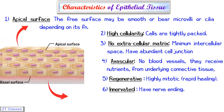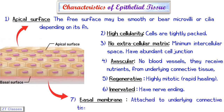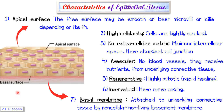The last characteristic of epithelial tissues is that they have a basal membrane — a thin, non-cellular membrane to which the epithelial tissues are attached. This basal membrane is further attached to the connective tissue beneath.